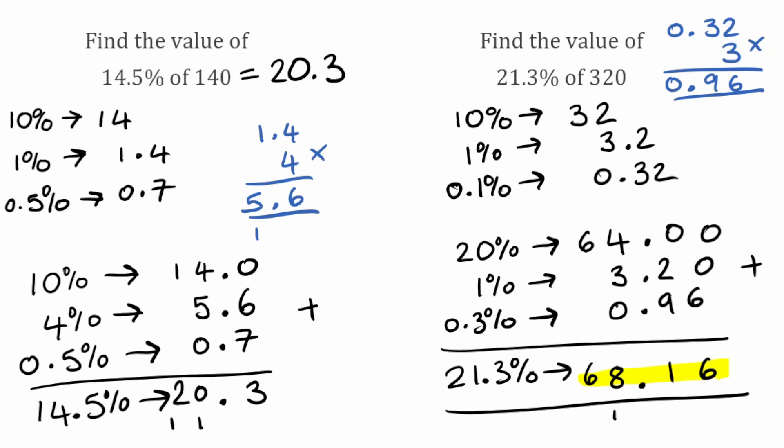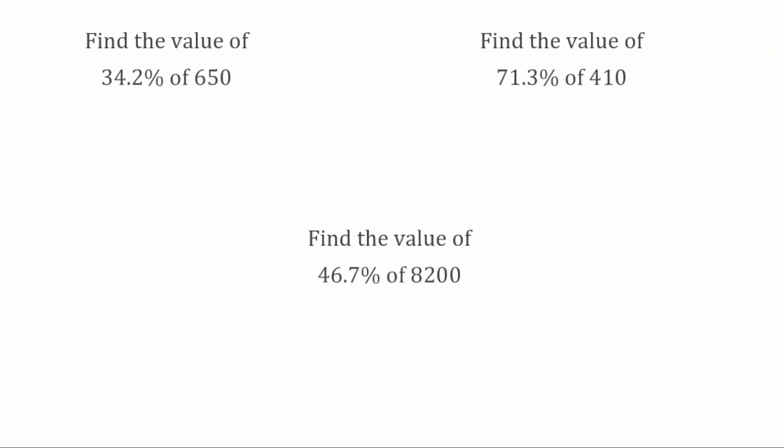So that's the method we're going to use today. To find these more difficult decimal percentages, we're going to partition these percentages into 10%, 1%, and 0.1%, and then find multiples of these to make the percentage that we need. Hopefully that made sense — we're now going to look at some more examples. Feel free to pause the video here and have a go at these, and we'll go through the solutions in just a few moments.